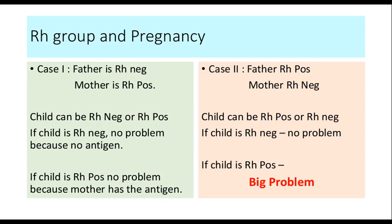Let's look at some pregnancy outcomes. In Case 1, the father is Rh negative and the mother is Rh positive. The child could be either Rh negative or Rh positive. If the child is Rh negative, there is no problem. If the child is Rh positive, there is still no problem because the mother is Rh positive and recognizes the Rh antigen on the child as self and does not mount antibodies against it.